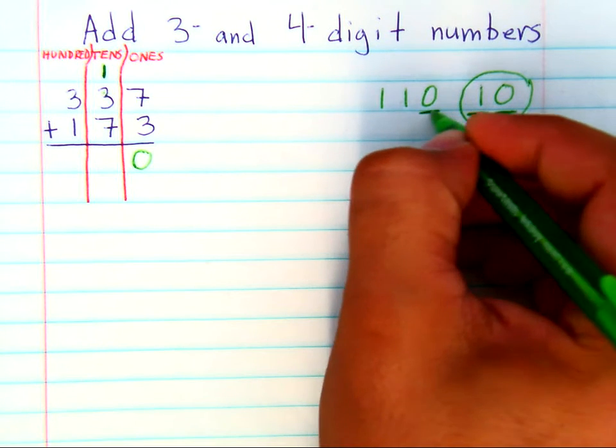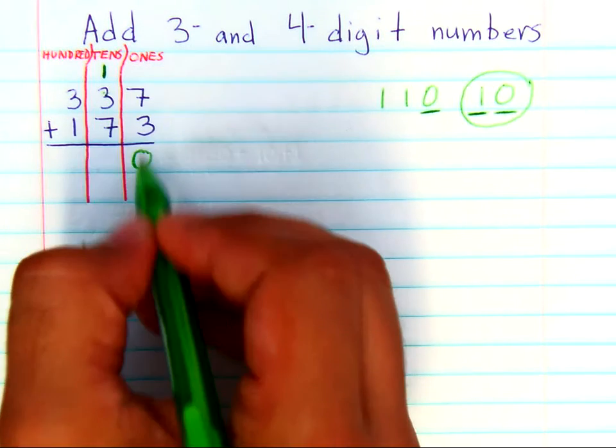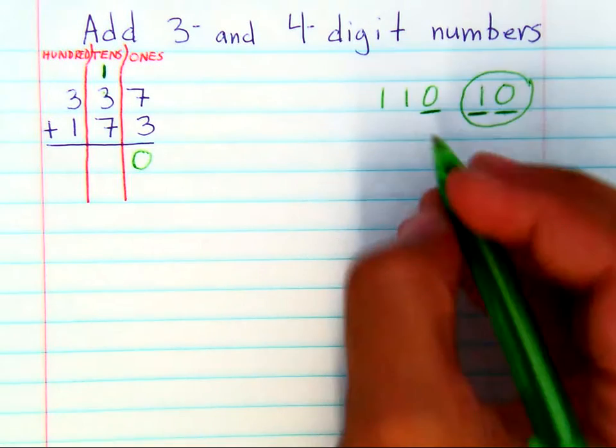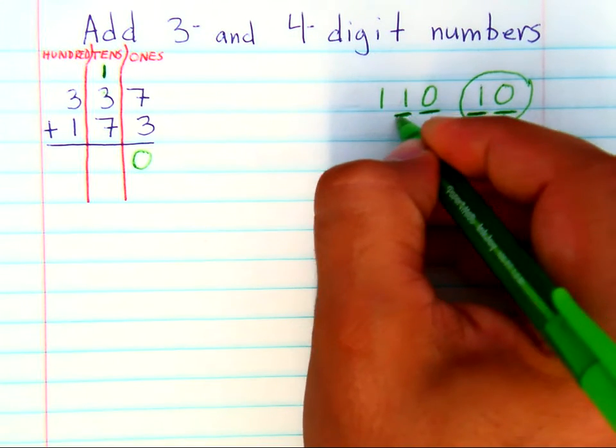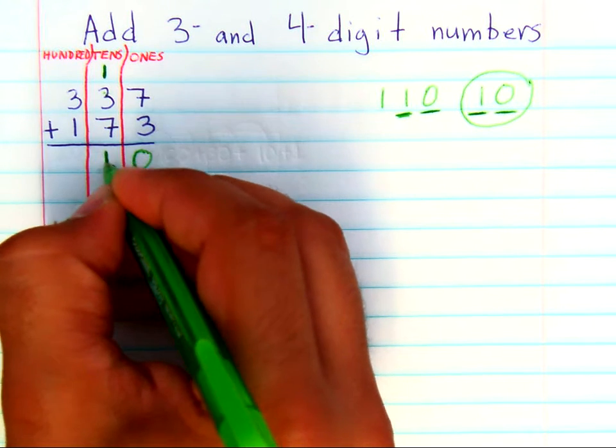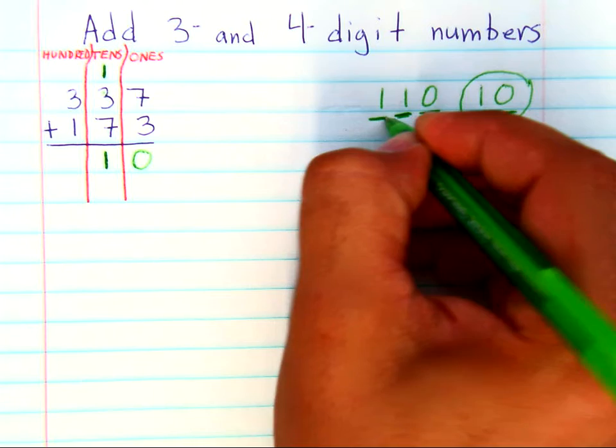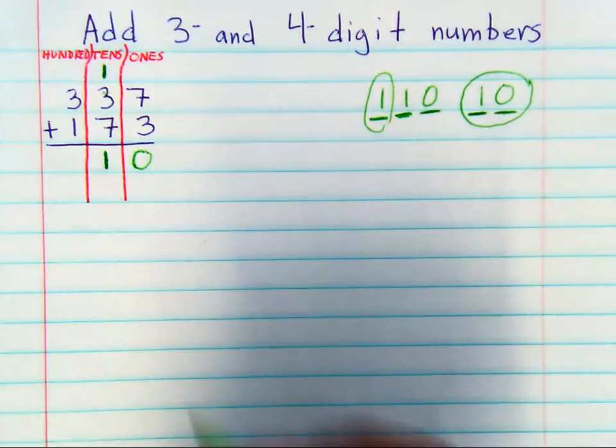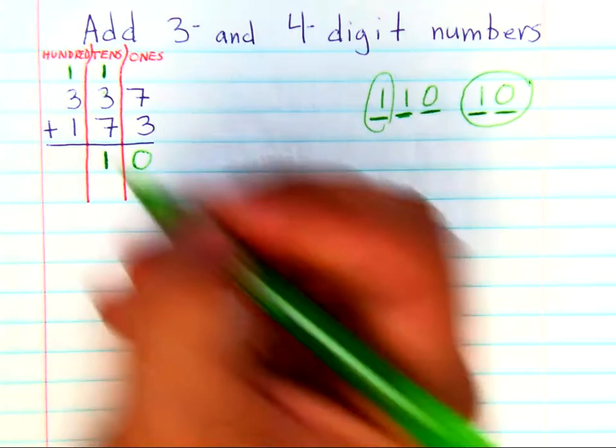This one goes in the tens place, because you have one ten left over after you've regrouped for that hundred, which now goes over here.